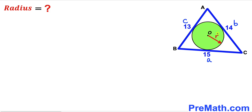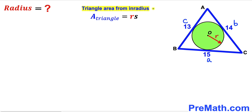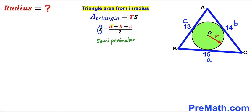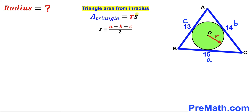Let's recall the triangle area formula from the inradius: the area of the triangle is equal to r times s, where s is equal to (a + b + c) / 2. This s is also called the semi-perimeter. Since we are interested in calculating the radius r, we will calculate the value of s and the area of this triangle.